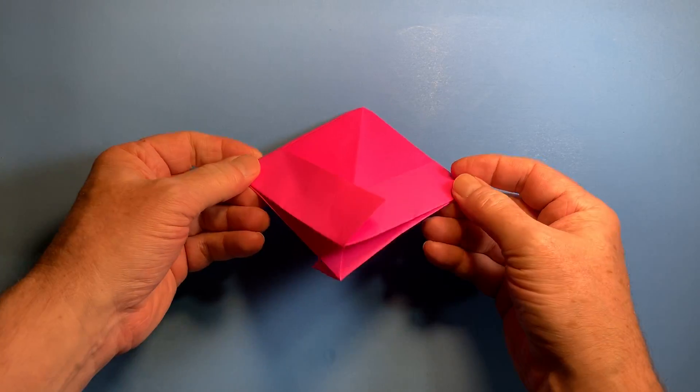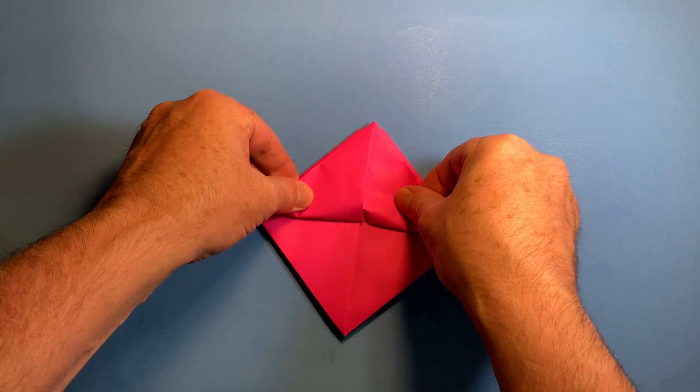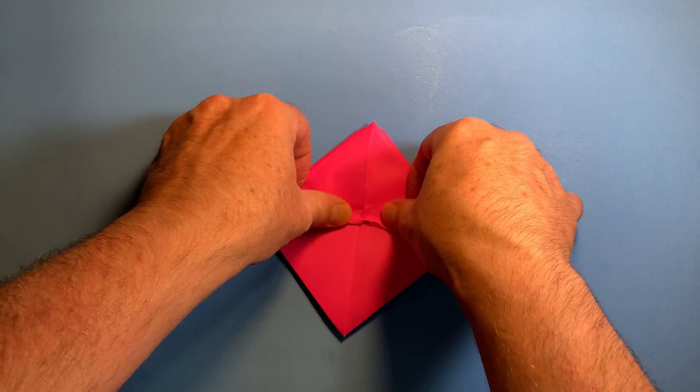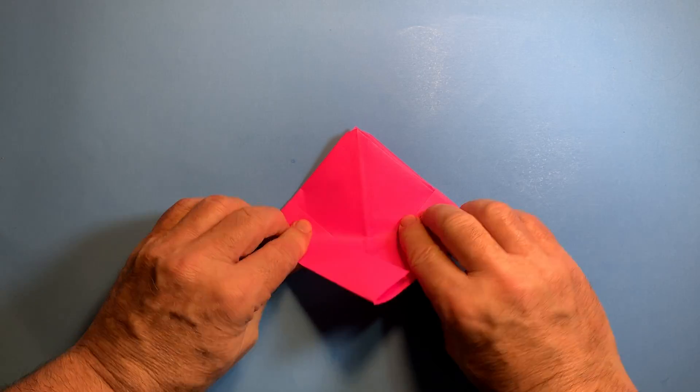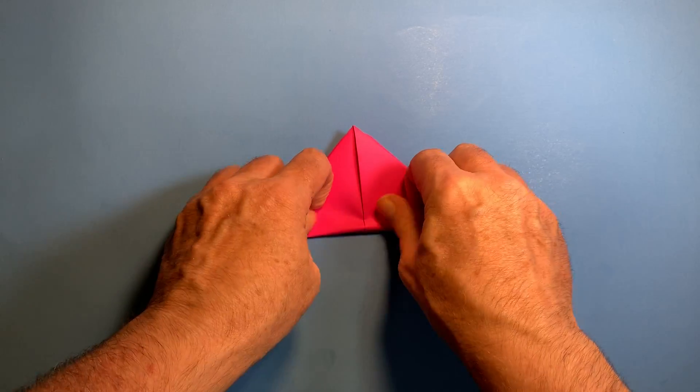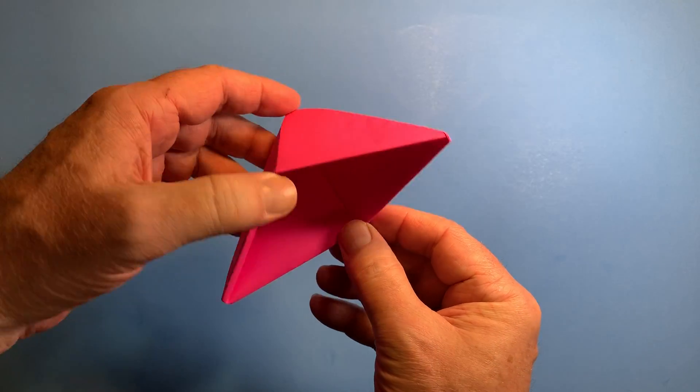So now we got another square. There's an open side. We're going to open it up like this, crease it really good, and this side, crease it again. Now we got like another little hat, and this could be a little hat too.